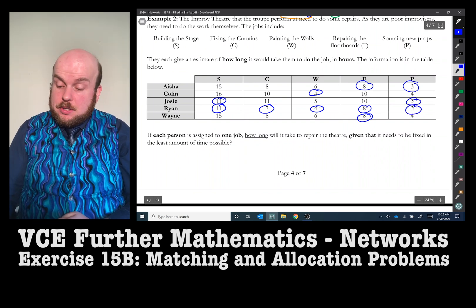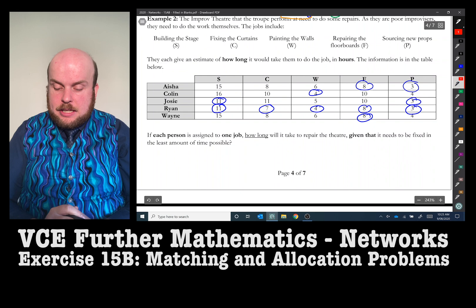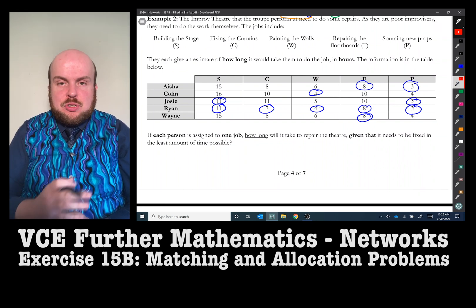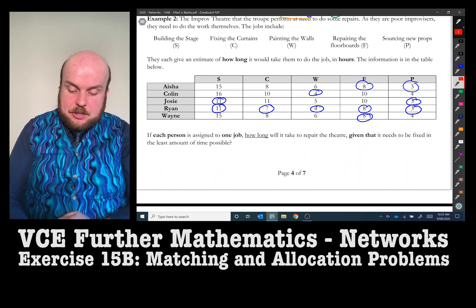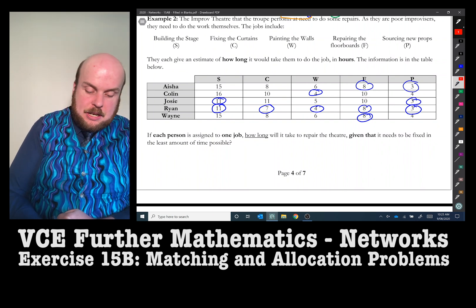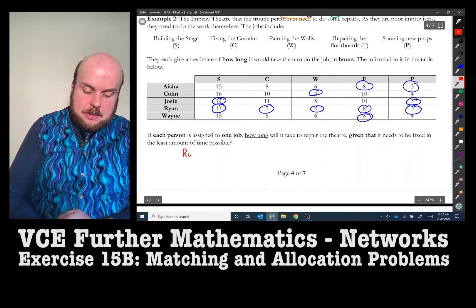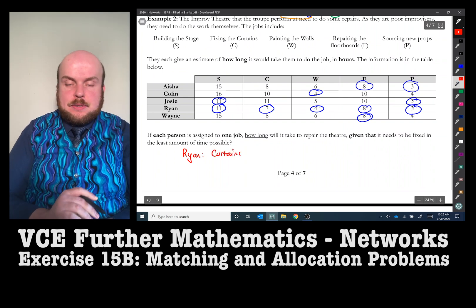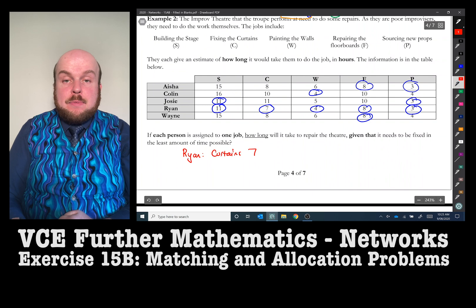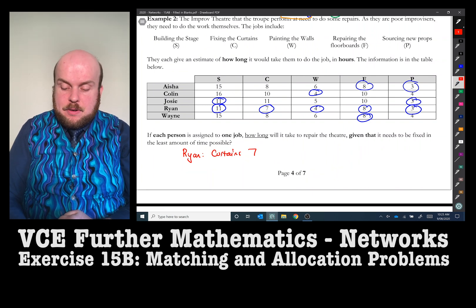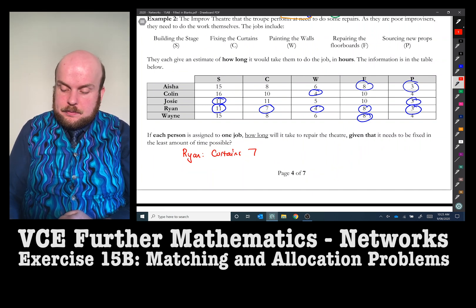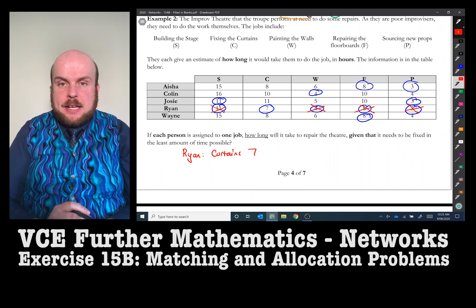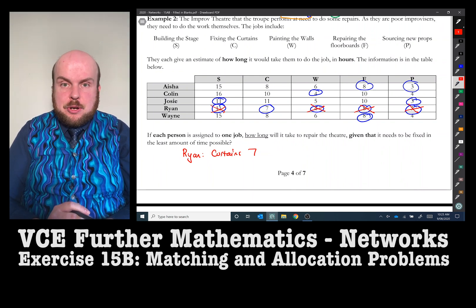So then what I would do is I would have a look at which job only one person can do. I only circled one number and that's going to be curtains. So Ryan should definitely be doing curtains, and he takes seven hours. From there, I can eliminate him from any other job. From here, we can pretty much ascertain who should be doing each of the other jobs.